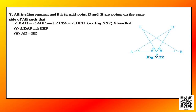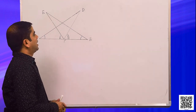Question 7 says: AB is a line segment and P is its midpoint. D and E are points on the same side of AB such that angle BAD is equal to angle ABE and angle EPA is equal to angle DPB. I have drawn the diagram as per your book.